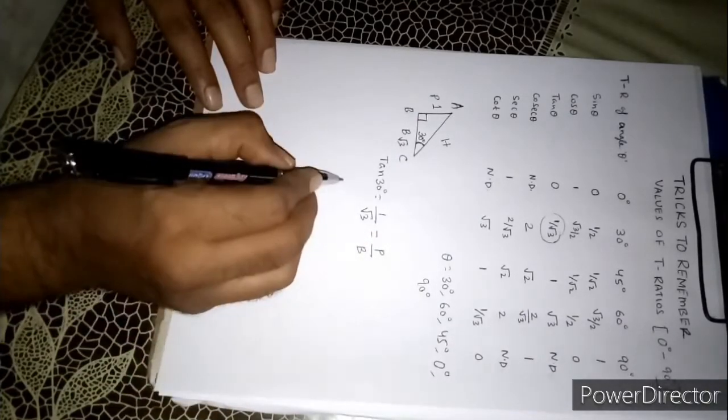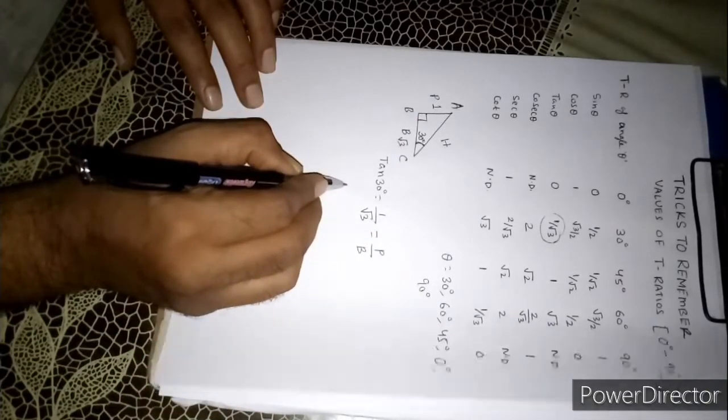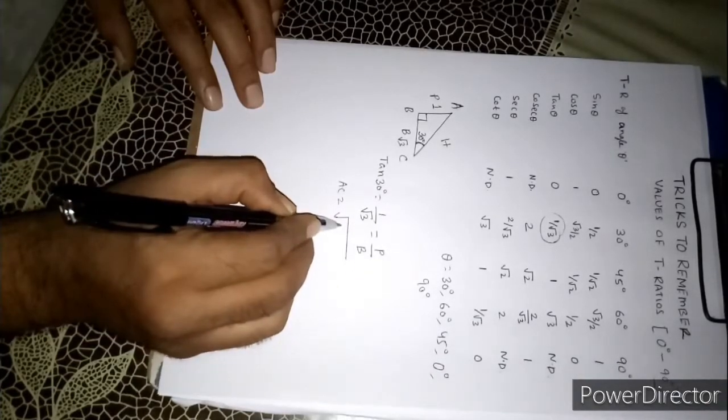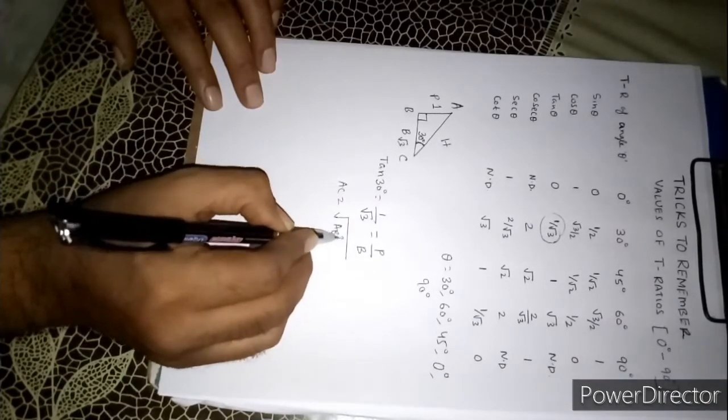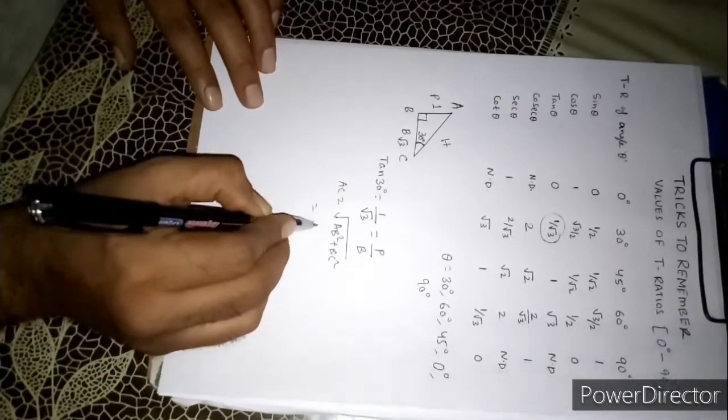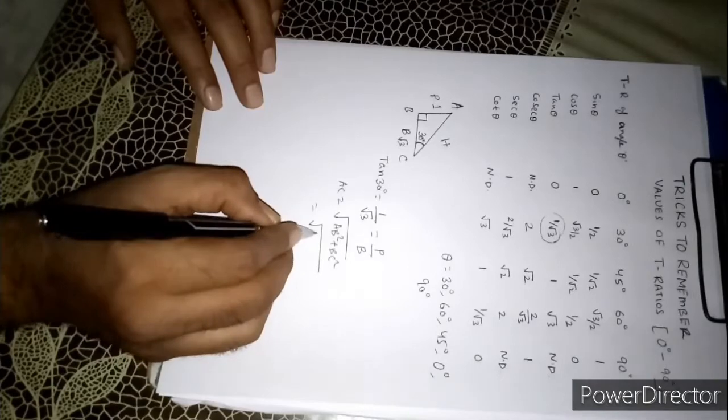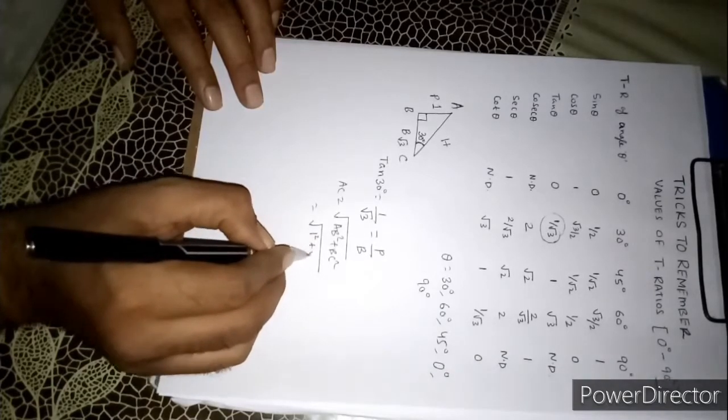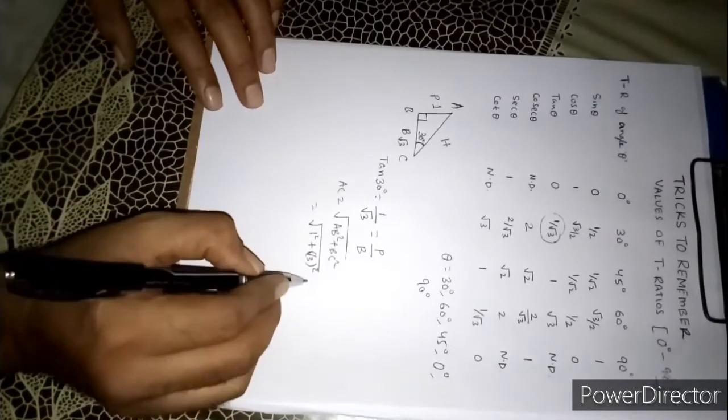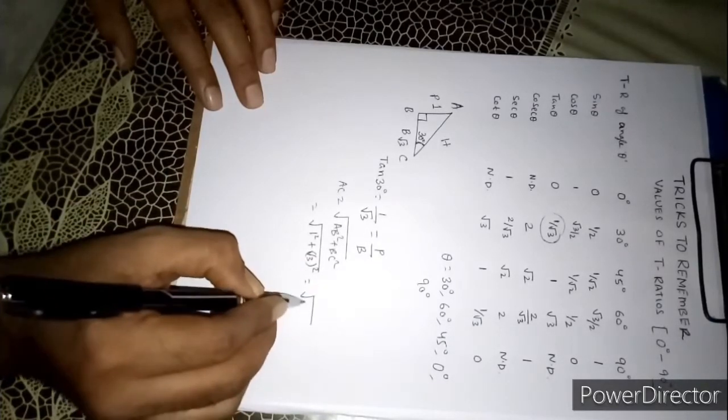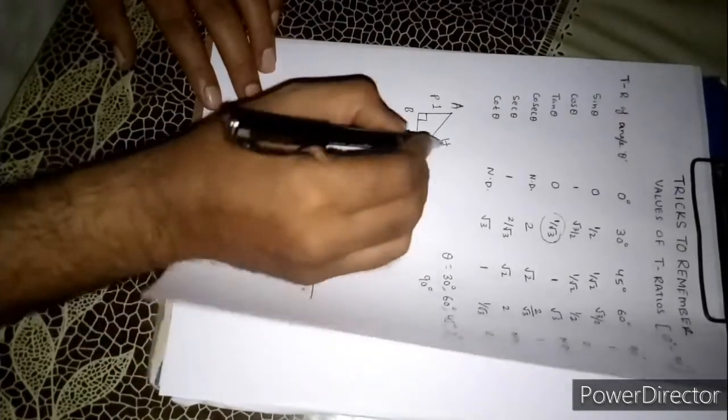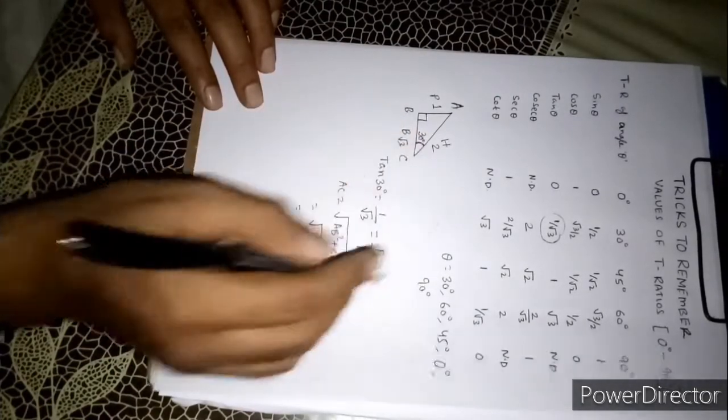Now if you apply the Pythagoras theorem, it means AC equals root over AB square plus BC square. It means you are getting 1 square plus root 3 square. You are getting 1 plus 3 that is 4. Ultimately you are getting 2. Here you can write now 2.